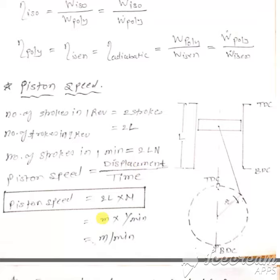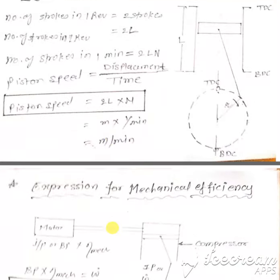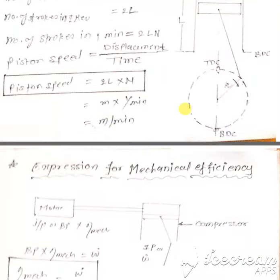Therefore, meter times 1 by minute, or meter per minute. Therefore, its unit is meter per minute. Therefore, piston speed equals 2LN.